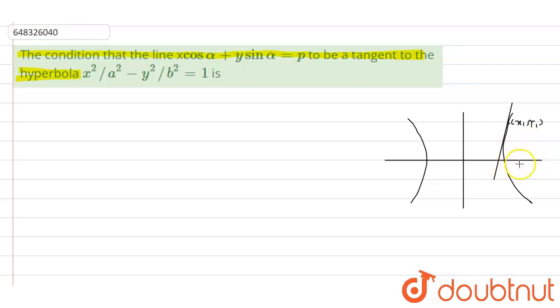So equation of tangent at the point (x₁, y₁) is given by: xx₁/a² minus yy₁/b² equal to 1. So this is the equation of the tangent, let's call it as equation 1.